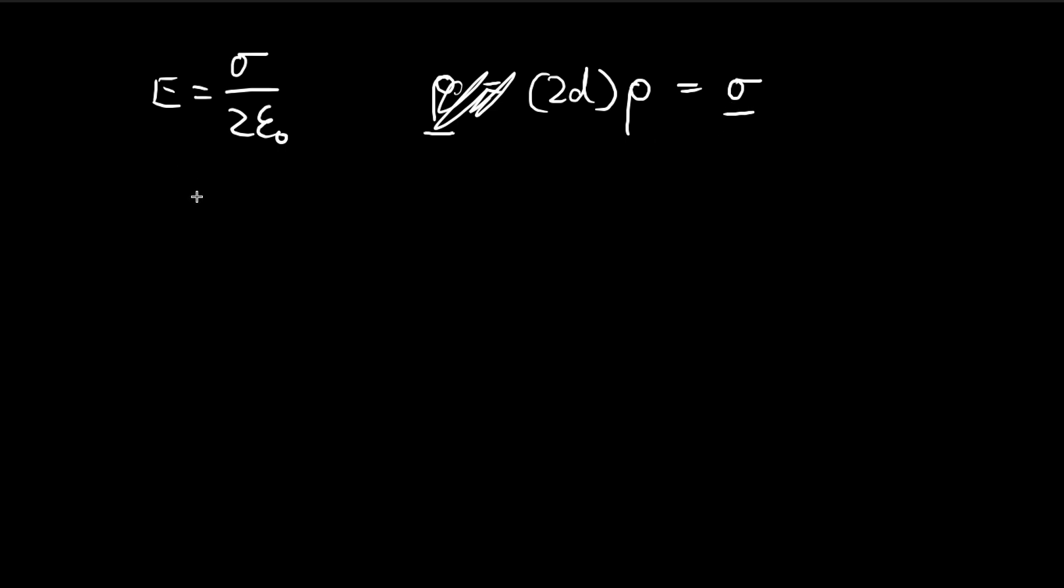So with our sigma, we can apply it to this formula. And then we find that the electric field is equal to 2d rho divided by 2 epsilon. So it's equal to d rho over epsilon. The 2s cancel out.